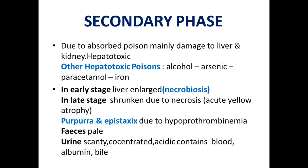The secondary phase is due to absorbed poison mainly. It causes damage to the liver and kidney — phosphorus is a hepatotoxic poison, meaning it causes liver damage. Other hepatotoxic poisons besides phosphorus are alcohol, arsenic, paracetamol, and iron. In the early stage, the liver is enlarged (necrobiosis); in the late stage, the liver is shrunken due to necrosis, also called acute yellow atrophy. Purpura and epistaxis may be seen due to hypoprothrombinemia. Feces are pale; urine is scanty, concentrated, acidic, and contains blood, albumin, and bile.